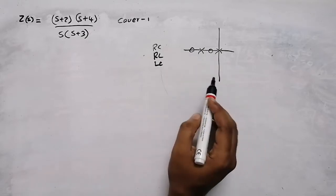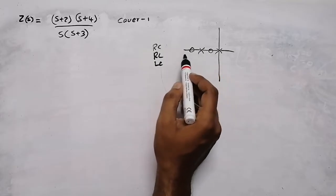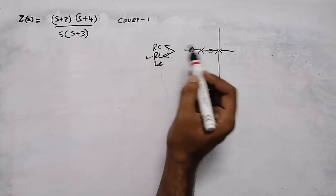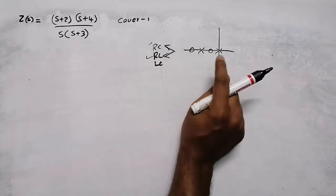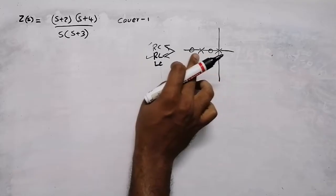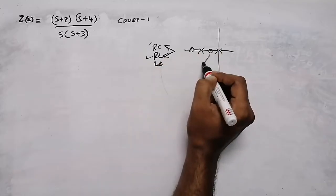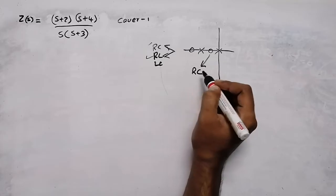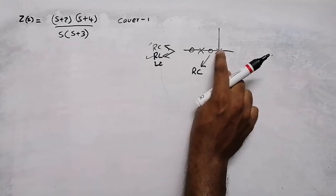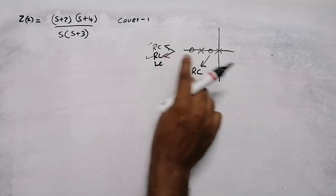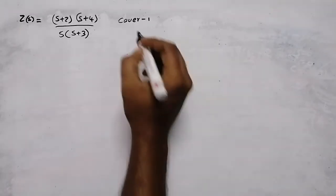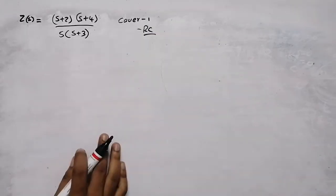If the poles and zeros are on the negative real axis, it will be either an RL or RC circuit. If the pole is at the beginning on the negative real axis, it is an RL circuit; if the zero is at the beginning, it is an RC circuit. Don't consider poles or zeros at the origin for this check — only on the negative real axis. Here, it begins with a zero, so this is an RC circuit.